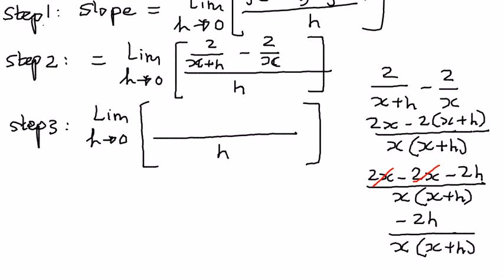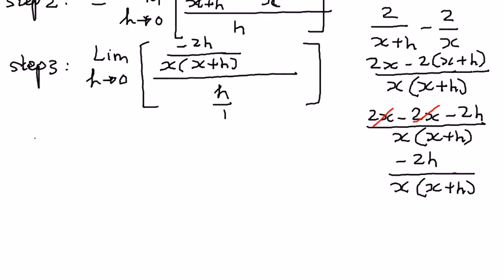So that is the way it simplifies. Therefore, we're going to bring this and put it up here as negative 2h, the whole thing divided by x times x plus h. Now in the denominator we have h, so I can write this as a fraction h divided by 1. In my next step, I'm going to write it as a multiplication and then write h over 1 as its reciprocal.